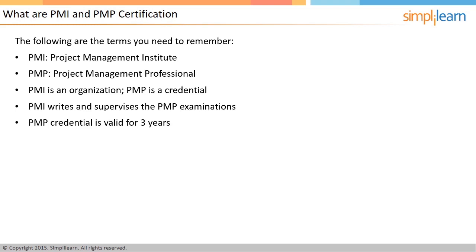A PMP credential is valid for three years. After the completion of this three-year period, it can be renewed for another three years. PMI measures project management experience in the units of PDU, which means professional development unit. You can acquire PDUs in many ways. For example, if you attend a project management class of one hour by an expert, it is considered equivalent to one PDU. If you write a white paper on a topic related to project management, it may be equivalent to five PDUs. PMI has detailed guidelines on what kind of project management activity amounts to how many PDUs. You can look for the CCR handbook on the PMI website for more details. Over a three-year period, one must have acquired 60 PDUs to be eligible to renew the PMP certification.